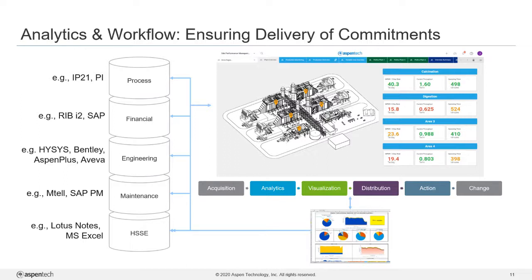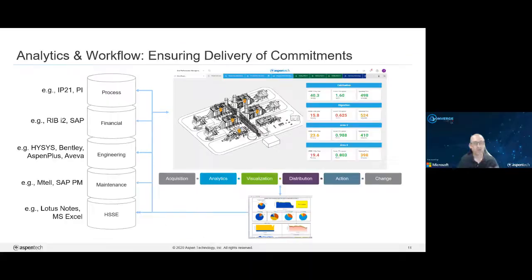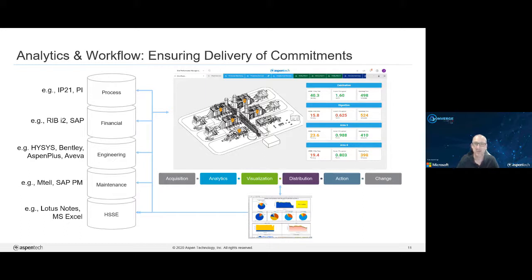Those six boxes in the middle — acquisition through analytics and visualization, all the way through distribution, action, and change — really summarize the capabilities of the platform. It's all about getting the data, making sense of it, generating information and allowing people to distribute it to their communities of like-minded users, so they can take real valuable action on it and thus transform their business.